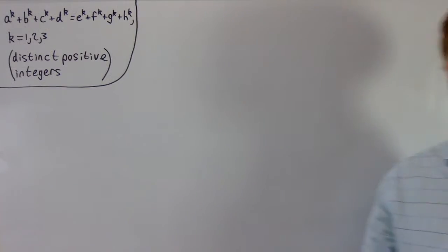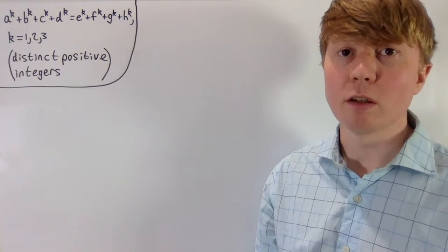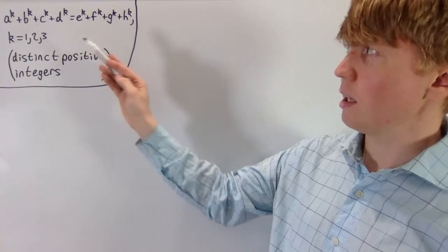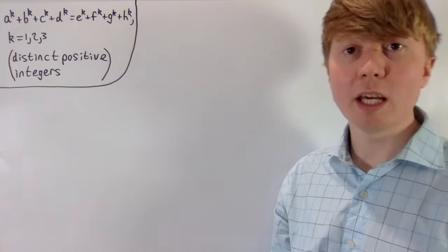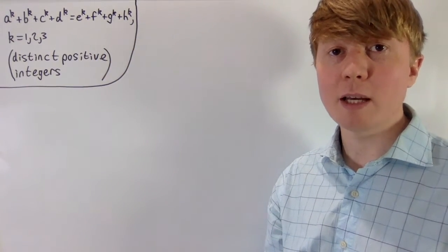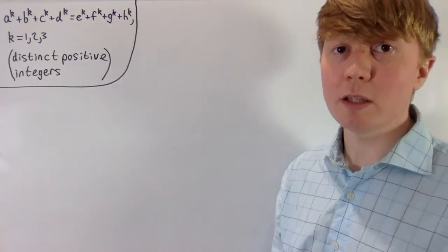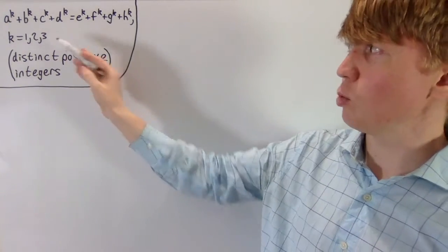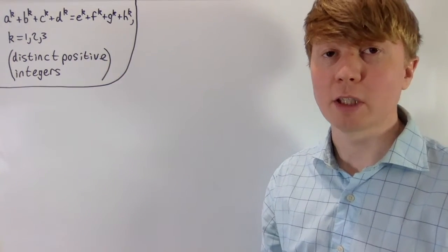Now we're ready to look for distinct positive integers a, b, c, d and e, f, g, h where the sum, sum of squares, and sum of cubes are all equal — written more compactly as the k-th power sums being equal for k equals 1, 2, and 3.